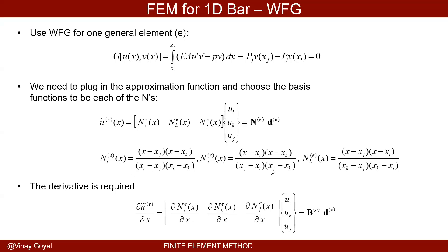We've shown the properties of shape functions and demonstrated partition of unity and the Kronecker delta. The node positions X_J, X_K are all known, so these are simple polynomials. Notice how U′ requires derivatives to be calculated. The derivative of Ũ with respect to X is required, and I've computed it and arranged it into a matrix I'm calling B bold.